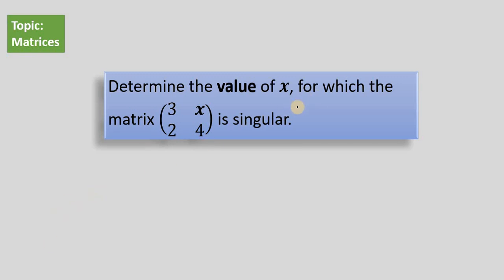Determine the value of x for which the matrix with components 3, x, 2, and 4 is singular. Now here's a concept. A matrix is singular if its determinant is equal to 0.